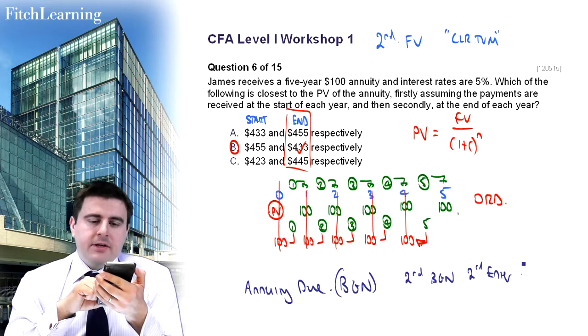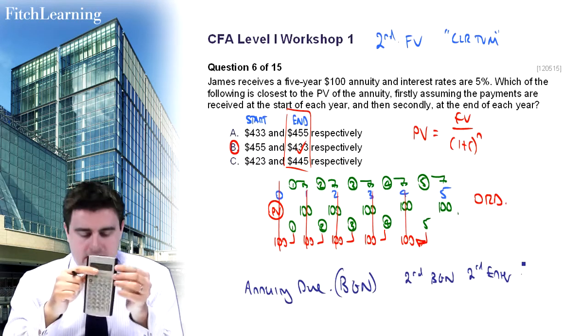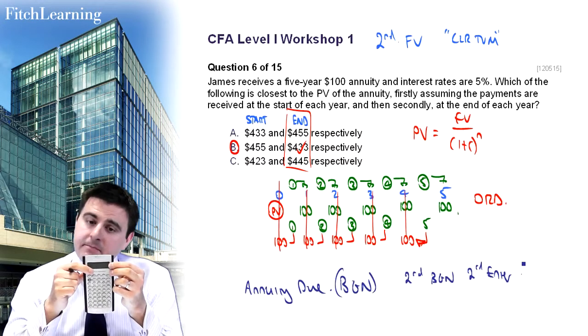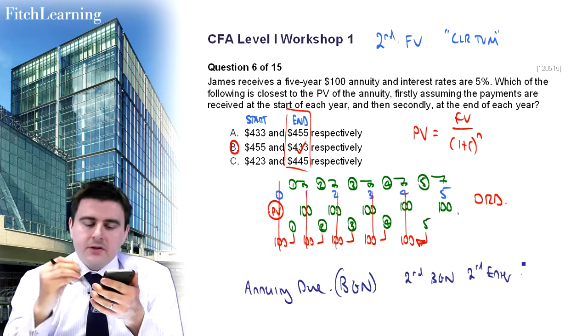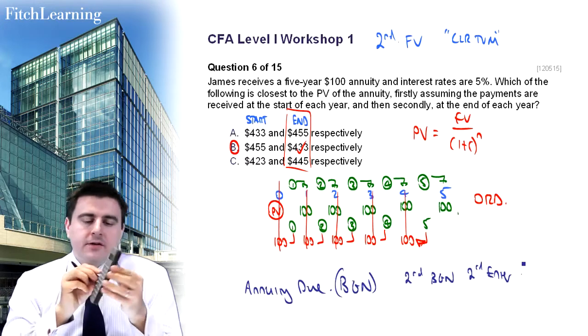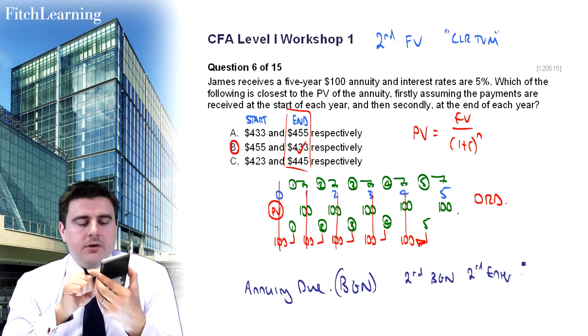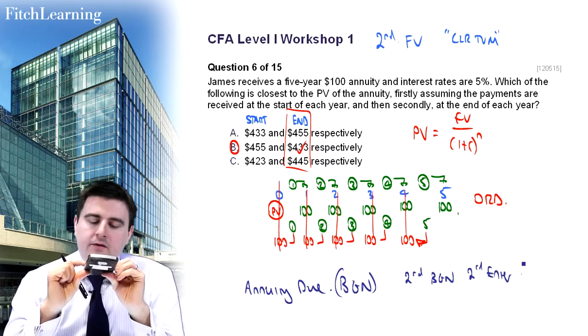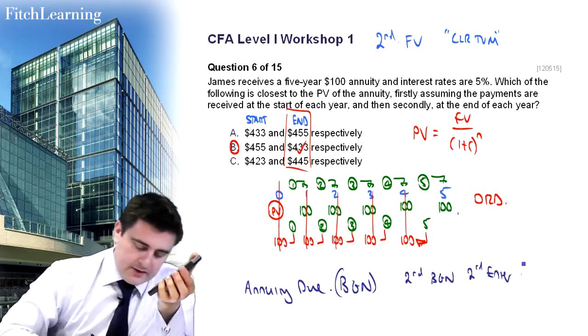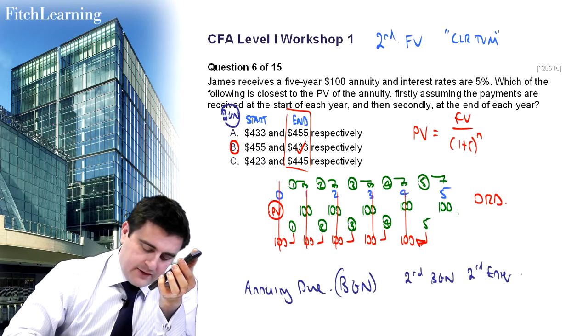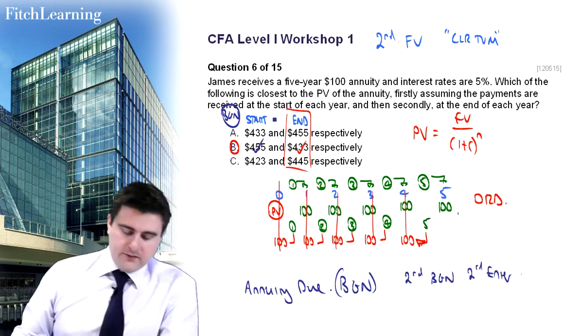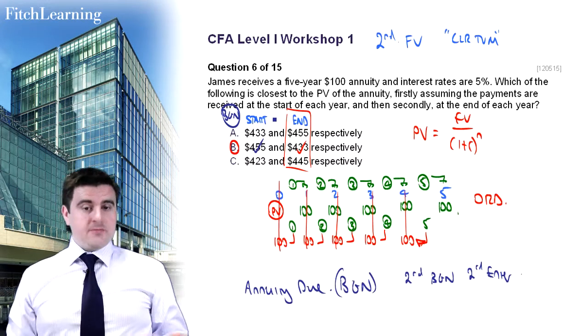So my calculator now says BGN. And you can see that in the top right hand corner of your screen, it'll say BGN for the fact that it is in begin mode. Now the numbers would already still be stored in the third row. So you wouldn't need to insert those again. If I press compute, and then present value, I can see here that I've got 454.5. That's making an assumption that the payments are at the start of the period. In other words, think of it as begin mode. And I have 454.59 and answer 455.